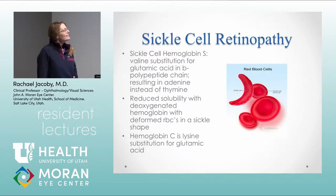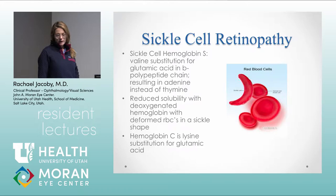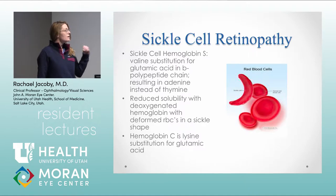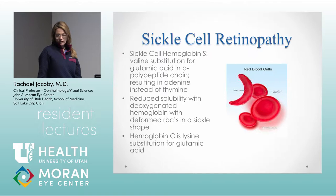Moving on to sickle cell retinopathy — this is a classic test question. Hemoglobin S is a valine substitution and hemoglobin C is a lysine substitution. You get deformation of these red blood cells that then sickle and thrombose, leading to vascular occlusions.